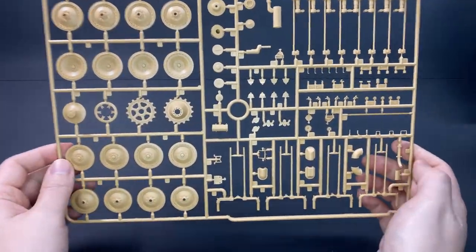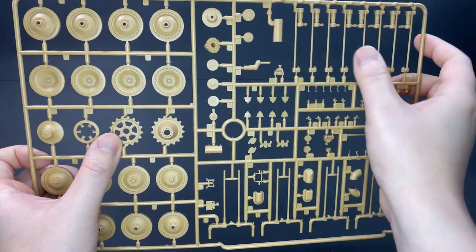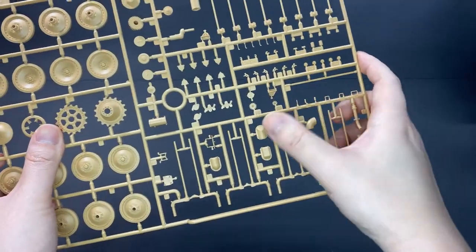Sprue C, more road wheels, the sprocket wheel, more suspension parts and also parts for the rear exhaust.